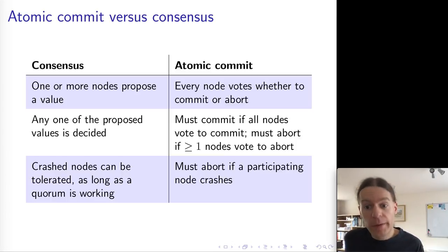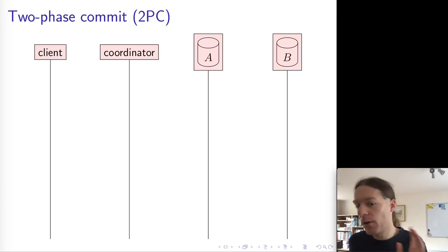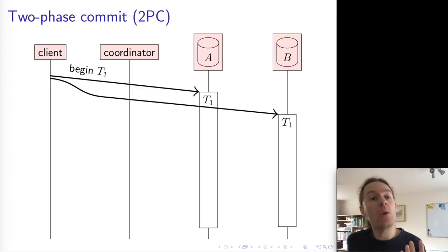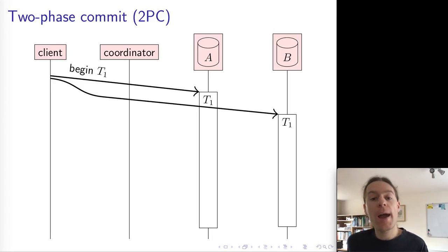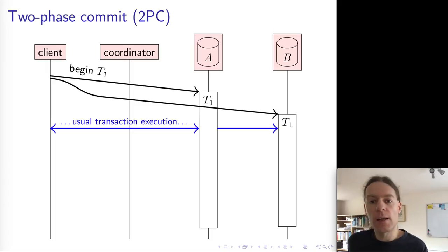This is atomic commitment, and the way we typically implement it is using an algorithm called two-phase commit. Two-phase commit sounds a bit like two-phase locking, which you've seen previously — don't confuse the two. Two-phase locking is about serializable isolation, whereas two-phase commit is about getting atomicity — very different areas. Two-phase commit only starts when we're ready to commit the transaction; the client begins a transaction as usual, sends some transaction identifier to the nodes, and does its usual reads and writes.